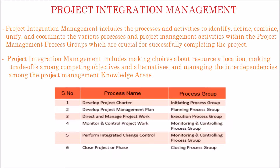Third process is direct and manage project work — the process of leading and performing the work defined in the project management plan and implementing approved changes to achieve the project's objectives. This belongs to the execution process group.